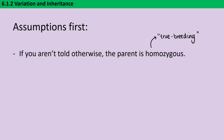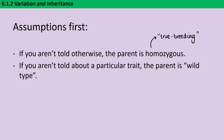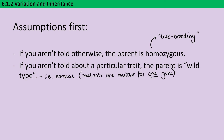The second assumption is that if you haven't been told about a particular trait for an individual, then that individual is just normal. The proper biological term for normal is wild type. Finally, if you haven't been told otherwise, you're going to assume that the wild type allele is the dominant allele for a particular gene.